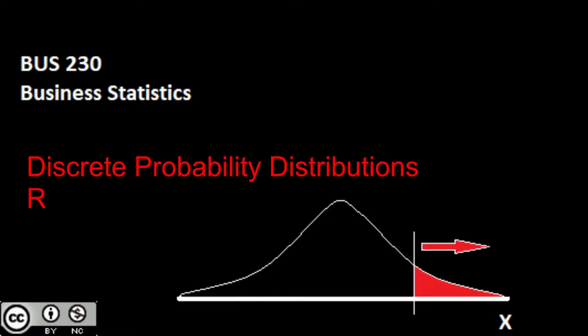In this video we'll take a look at discrete probability distributions utilizing R to calculate. We're going to be taking a look at the binomial and the Poisson, and we'll take a look at how exactly we're going to graph these and create the bar chart for each one given the distribution that arises. So let's take a look at that here.